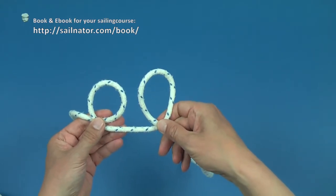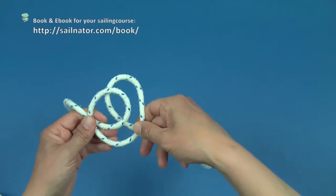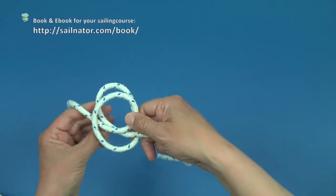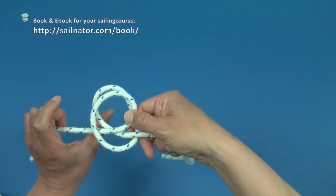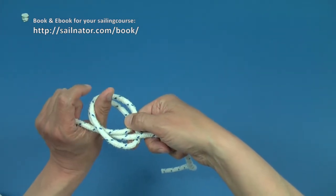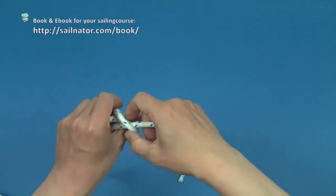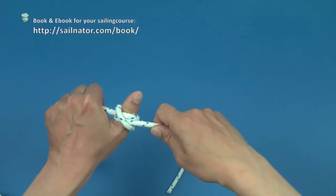I push the loop that is closer to the line's end under the loop that is closer to the moored end of the line. I put both loops that are lying one on the other over my thumb, which serves as the post or the tiller. I pull on both parts of the line now and the laid clove hitch is finished.